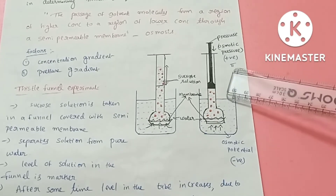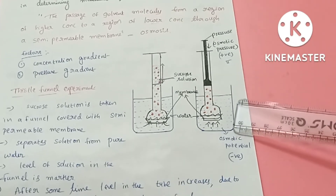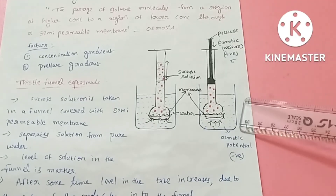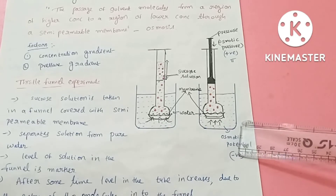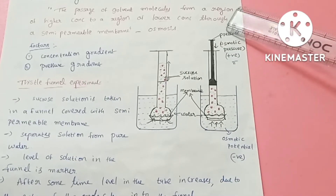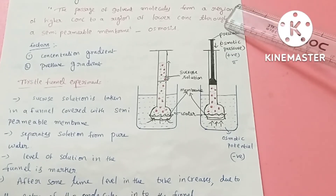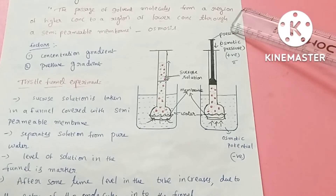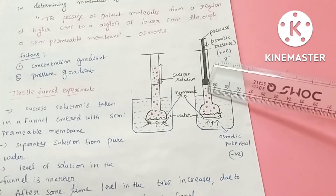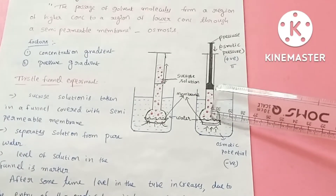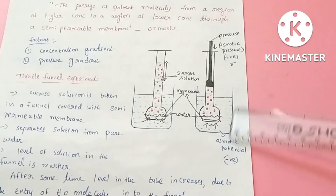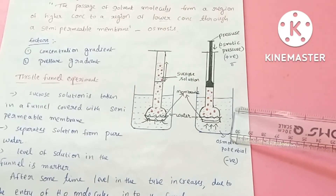While osmotic pressure is positive, osmotic potential is negative. Osmotic potential is the potential of water to move from a hypotonic solution to a hypertonic solution through a semi-permeable membrane, and it is always negative.